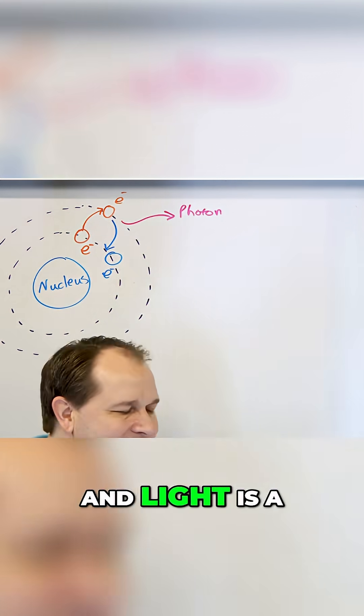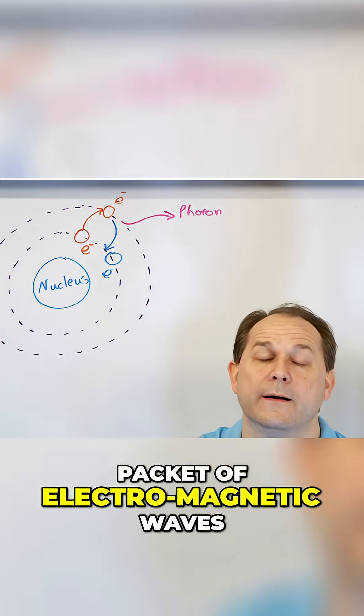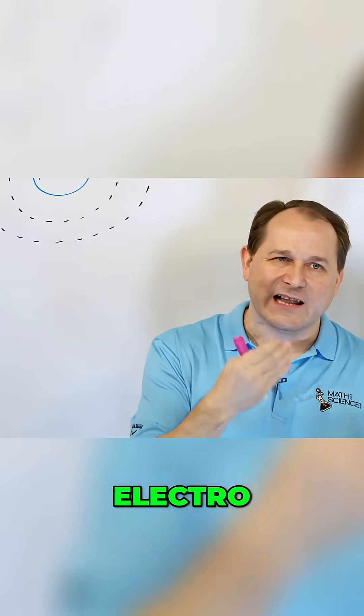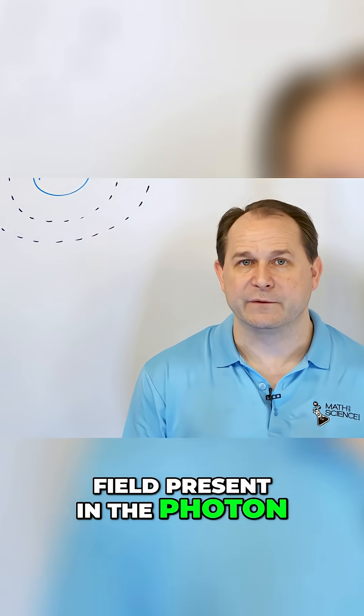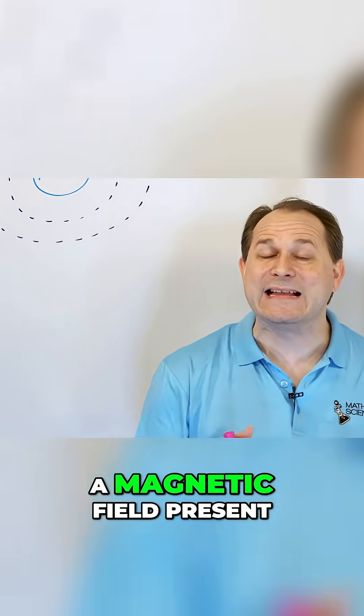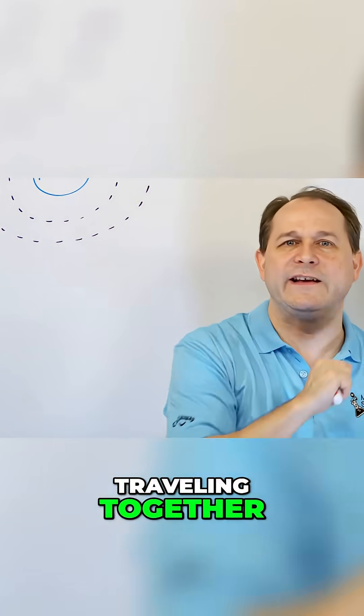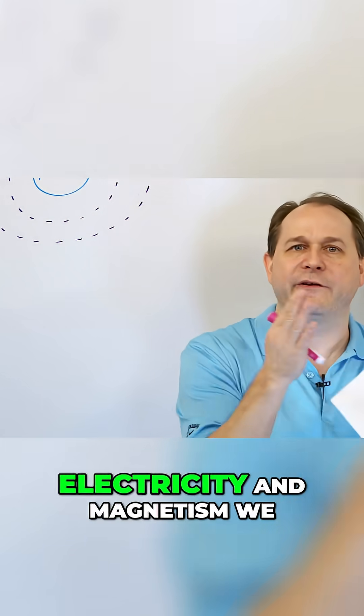A photon is just a packet of light, and light is a packet of electromagnetic waves. Electro because there's an electric field present in the photon, and magnetic because there's a magnetic field present, traveling together. They're a packet of electricity and magnetism we call an electromagnetic wave.